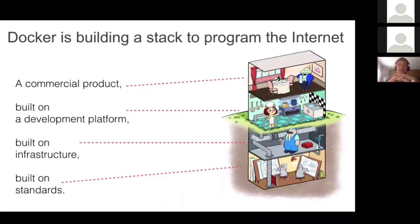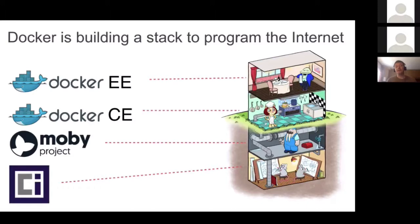In order to achieve that, we're building the stack to program the Internet, starting at the bottom with standards — the OCI standard for image and runtime for containers. On top of that we have infrastructure components that people can use separately, and then we build a development platform and a commercial product. At the standards level there's OCI, a Linux Foundation collaborative project where 40 companies working on containers converge to create standards. The standard for runtime and image has been in the works for nearly two years and is nearing a 1.0 pretty soon.